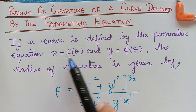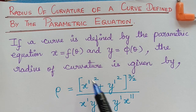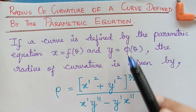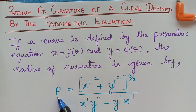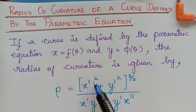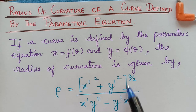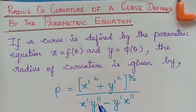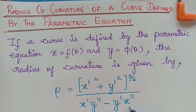Now we are going to find the radius of curvature for the parametric equation. The formula is: rho equals (x' squared plus y' squared) raised to the power 3/2, divided by (x' y'' minus y' x'').